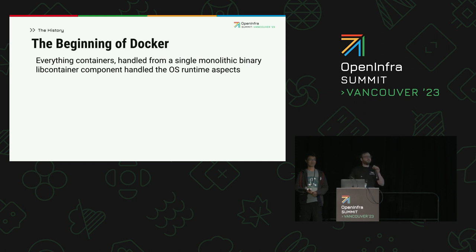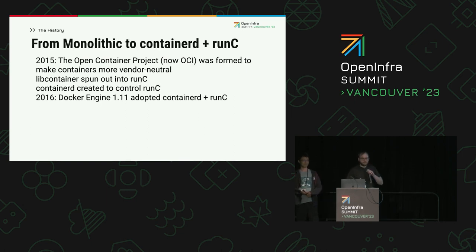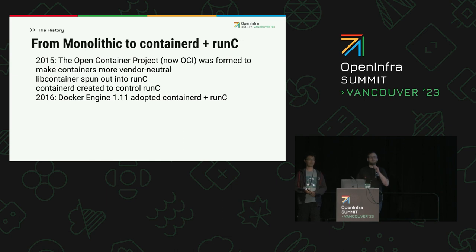There was a component called libcontainer that handled the actual low-level bits. In 2015, the Open Container Project — now known as the Open Container Initiative — was formed to make containers more vendor neutral. Docker modified libcontainer to run independently and donated it to the OCI as runc. They then released containerd, a daemon for controlling runc, and in 2016 containerd and runc were incorporated back into Docker Engine version 1.11.